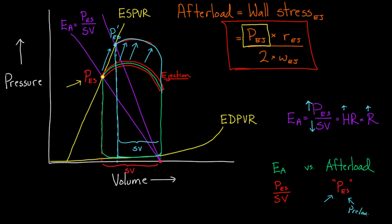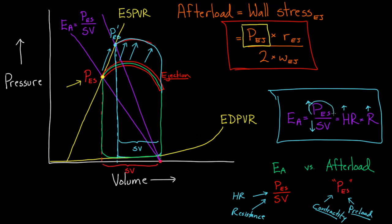But not too many things affect EA. Things that change EA are heart rate and resistance. Remember this formula: if you're thinking about afterload, you're talking about everything that could affect it, including preload and contractility, because they change stroke volume. If you're talking about elastance, only heart rate or resistance will change it. It's simple when you look at the formula, but people often confuse arterial elastance with afterload. They're very related but not exactly the same thing.